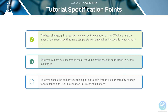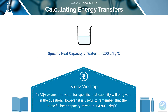Now let's look at the next specification point, covering specific heat capacity. Usually, you will be given the value for specific heat capacity in the exam question or in the AQA data booklet. However, it is useful to remember that the specific heat capacity of water is around 4200 joules per kilogram per degree C.